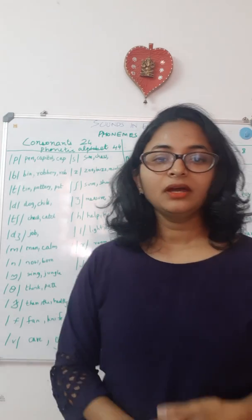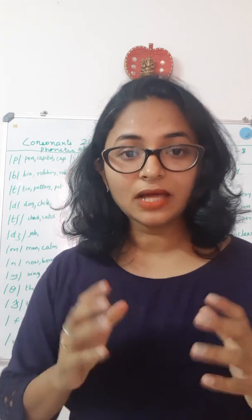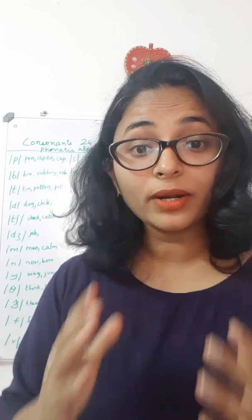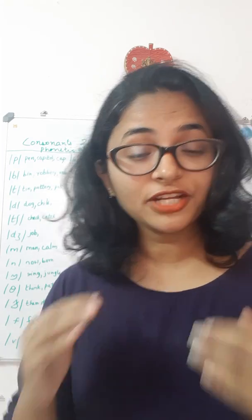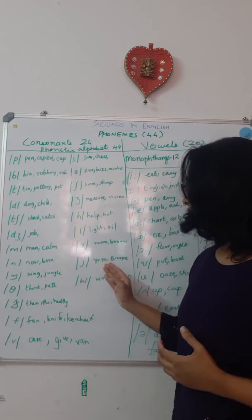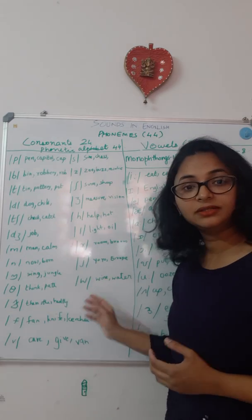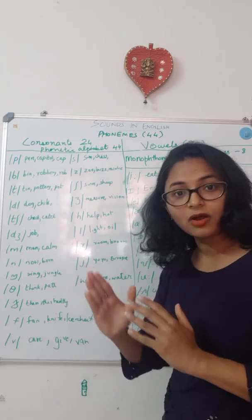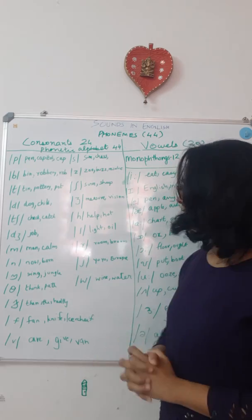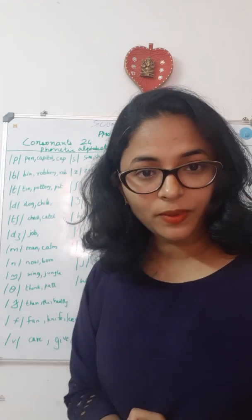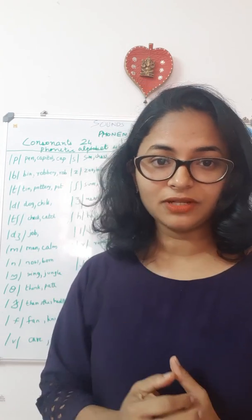As I said, consonants are the sounds produced with audible friction, but there are a few sounds which are produced without any friction. They are called frictionless continuants, and they are /l/, /j/, and /w/. They are produced without any friction but still they are consonants, and they are called frictionless continuants. /j/ and /w/ show the qualities of a vowel, so they are called semi-vowels.